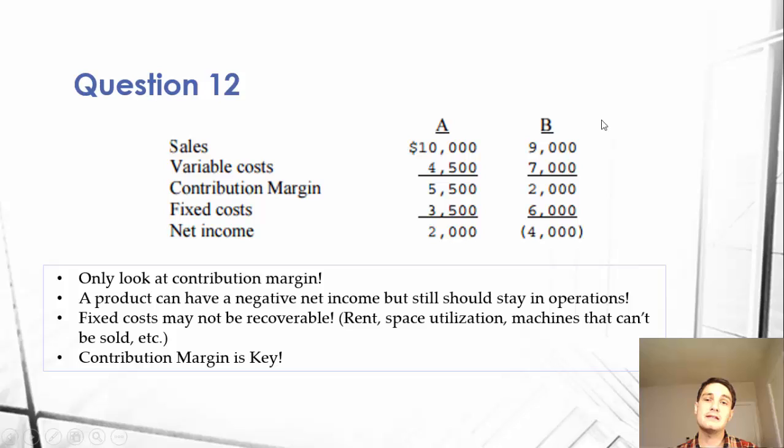So when making decisions about product lines, we should focus on variable costs and a better number overall is the contribution margin. Sales minus variable costs equals contribution margin. Contribution margin is one of my favorite numbers in accounting. It's extremely useful for decision making, but all it means is how much money am I making per item, not considering fixed costs.